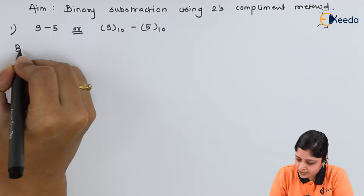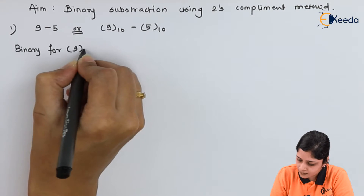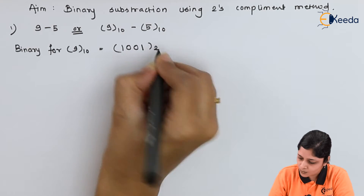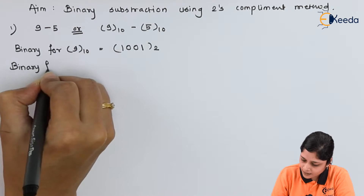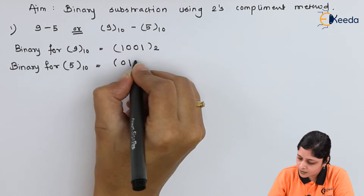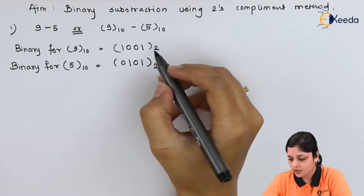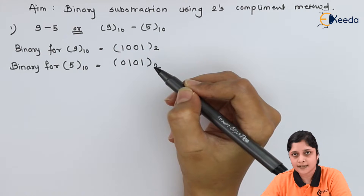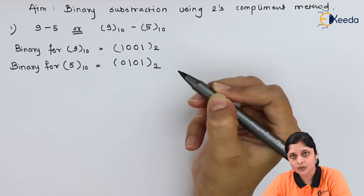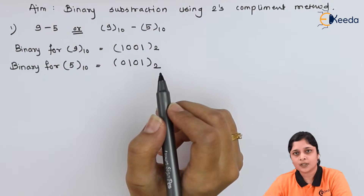First step: write down the binary for 9, which is 1001 base 2. Binary for 5 is 0101 base 2. While doing the subtraction, make sure all the bits are the same length for 9 and 5. Here we have 4 bits each: 1, 2, 3, 4 for both. Now it is fine, you can proceed to calculate the subtraction.